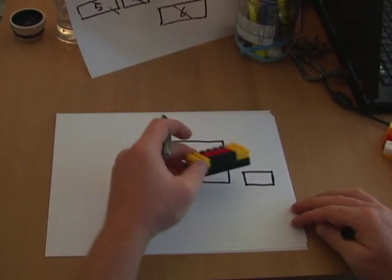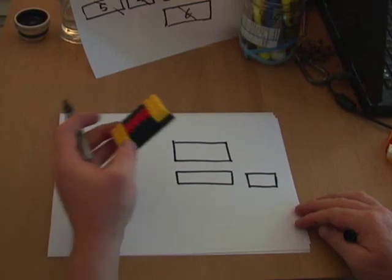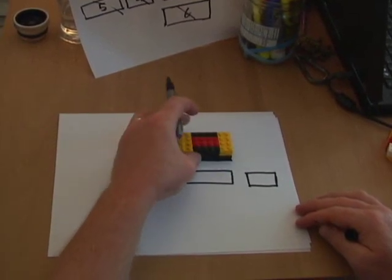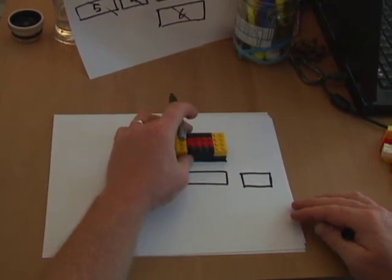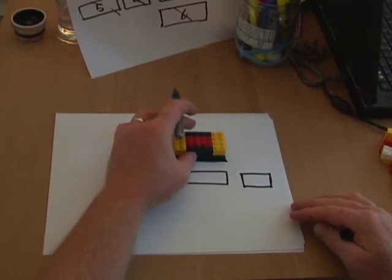Now we have the three most important views of the orthographic drawing. But, let's continue on, because some objects have more detail, and we need more views.